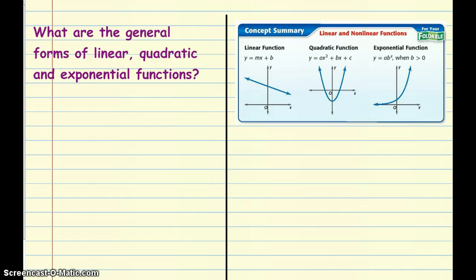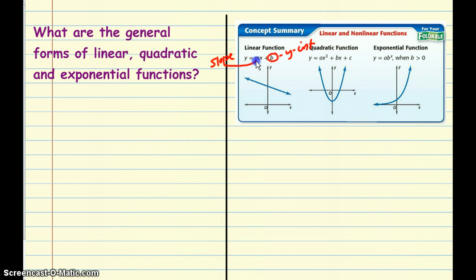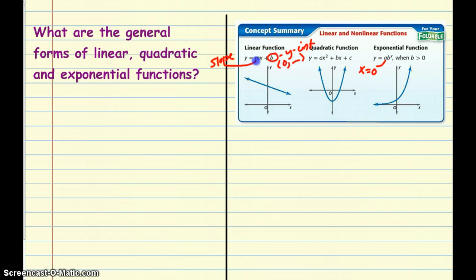Let's take a look at the general forms of linear, quadratic, and exponential functions. In a linear equation, m represents the slope and b is the y-intercept. The y-intercept is where the graph crosses the y-axis, and that coordinate pair is zero comma something. In exponential functions, a is the term where x is zero, and b is what you multiply by.